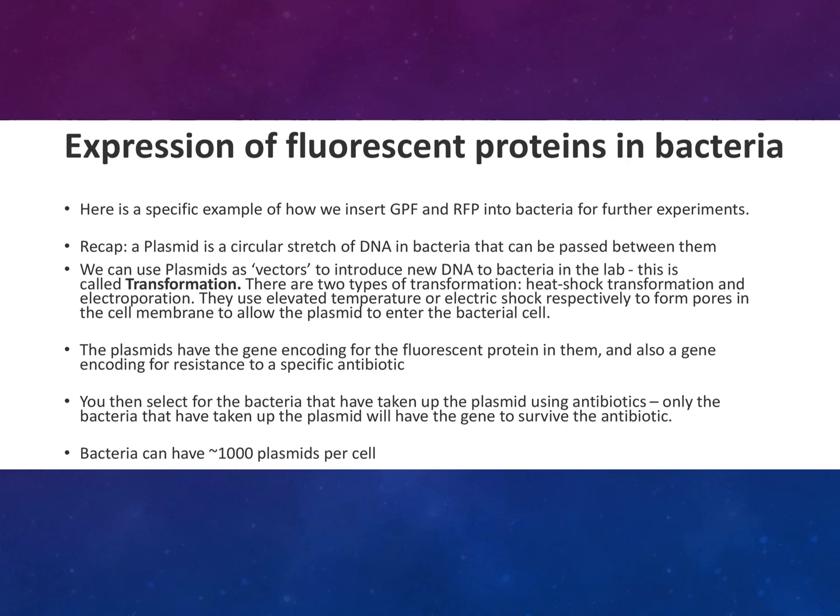There are two types of transformation: heat shock transformation and electroporation. They use elevated temperatures and electric shock respectively to form pores in the cell membrane to allow the plasmid to enter the bacterial cell. The plasmids have a gene encoding for the fluorescent protein and also a gene encoding resistance to a specific antibiotic. We can then select for the bacteria that have taken up the plasmid using antibiotics — only those that have taken up the plasmid will have the gene to survive the antibiotic, and the ones that don't will be killed. Bacteria can have approximately 1,000 plasmids per cell.